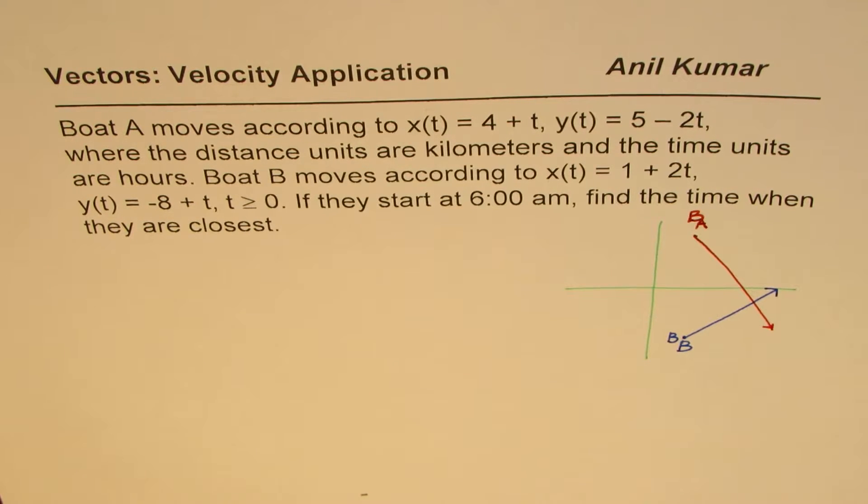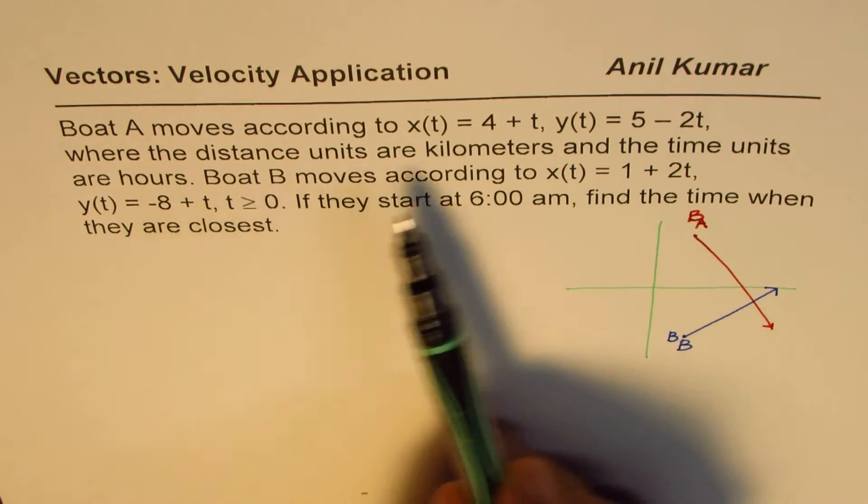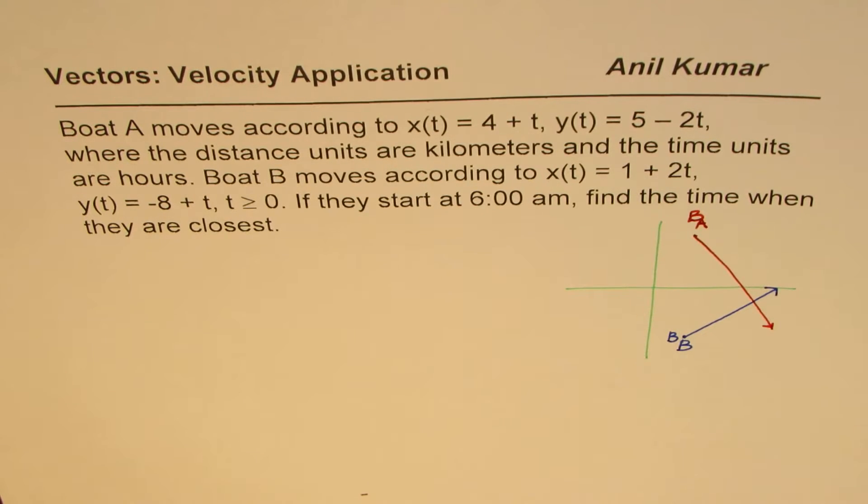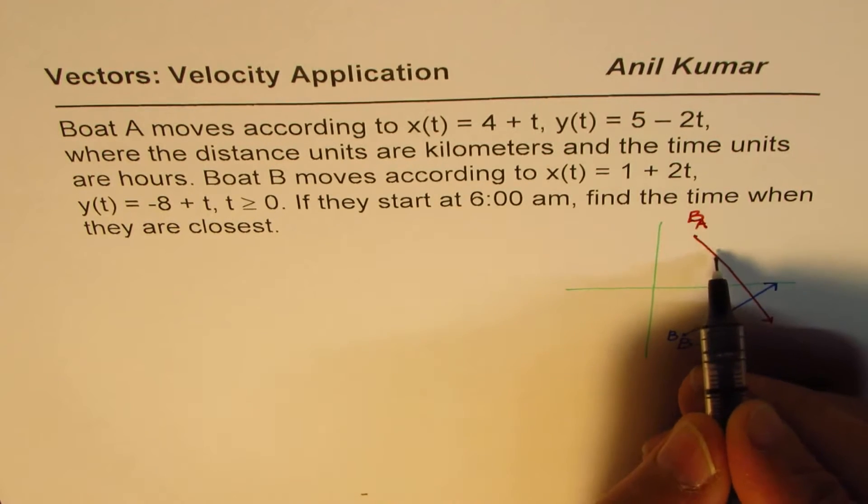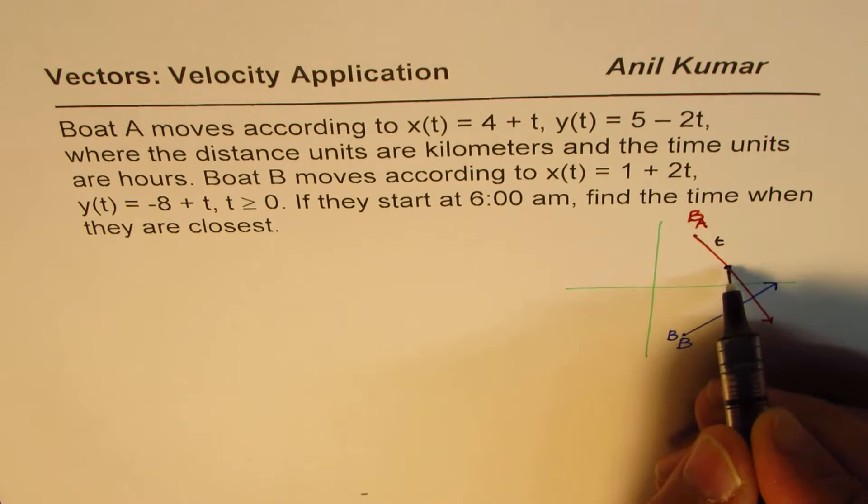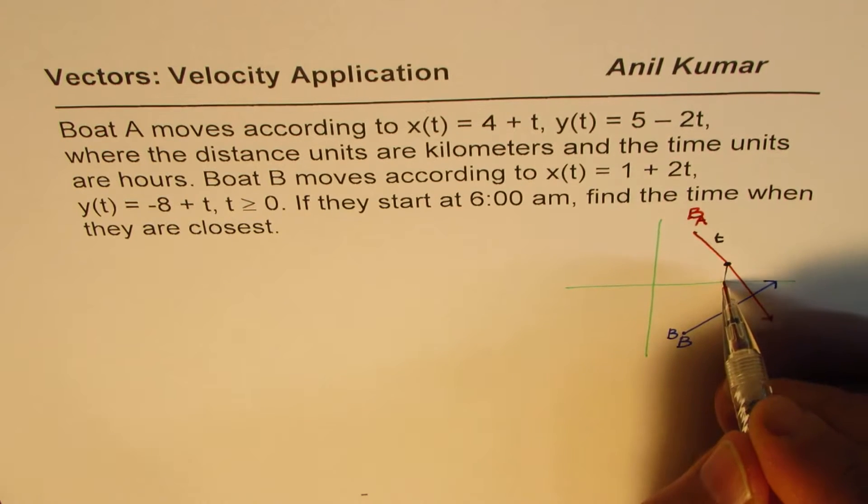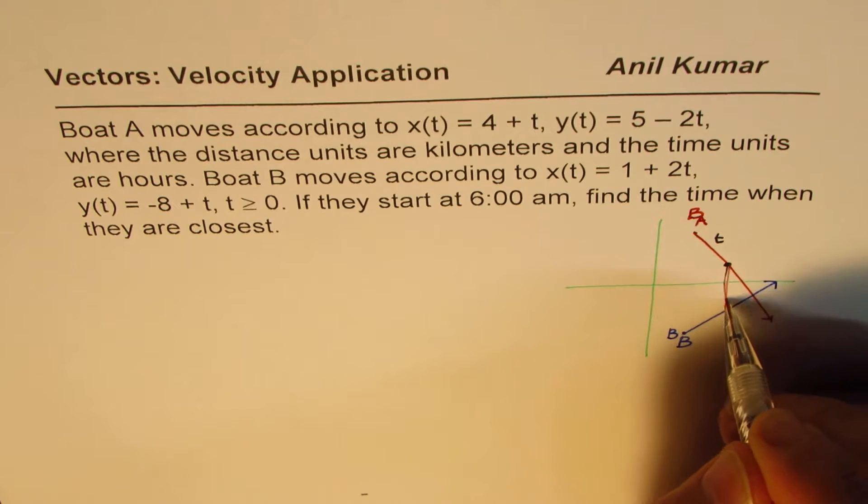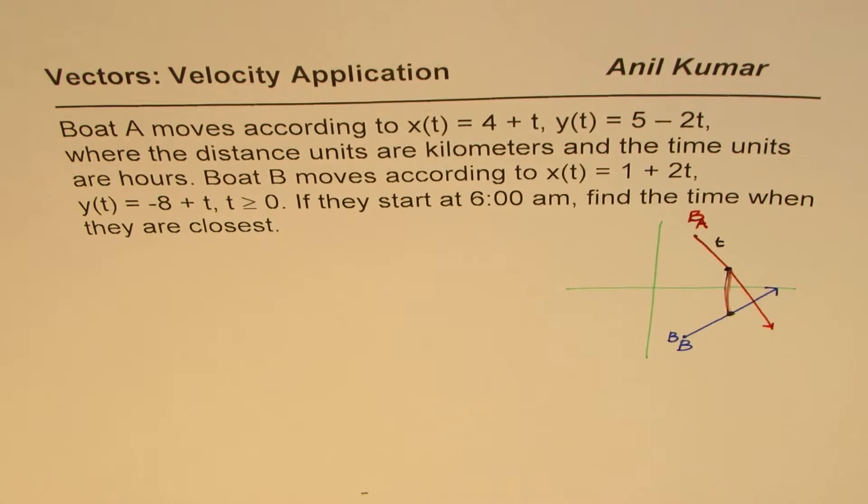We need to find where they are closest. In the diagram you see as if they cross, but they don't cross at the same time. Their paths will cross and these are at right angles, as you will observe. The distance will be, let us say, at time t, since they start at the same time. Let's say after time t, the position of boat A is somewhere here and the position of boat B is somewhere there. This distance is the distance between the two boats. We want to find the time when this distance is minimum.